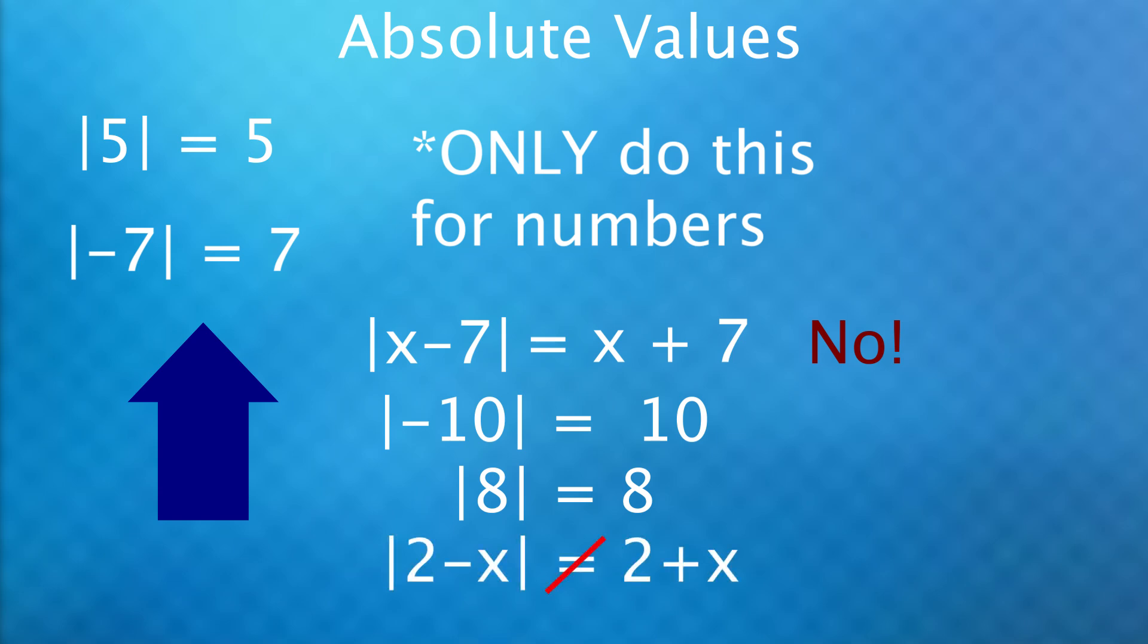Even if you're given the absolute value of negative x, that does not equal x. The best you could do is this. There are rules for solving these more complicated equations which I'm not going to cover, but at least don't go changing every negative sign inside an absolute value. Do it for lone numbers only.